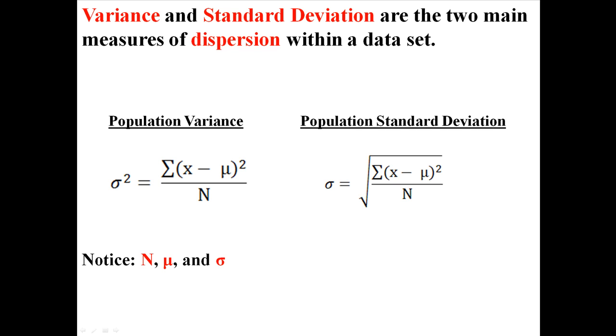These are commonly called the definitional formulas and they take a little bit longer to do. Eventually I'm going to teach you the computational formula which is a lot shorter but it does make a little bit less sense. Now notice in these formulas we're using capital N because we're talking about population size, we're using μ because we're talking about population variance, and we're using σ because we're talking about population standard deviation. If we were doing it for sample we'd be using different letters.